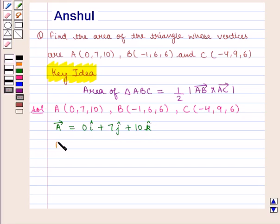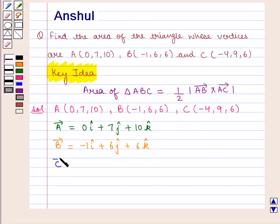Position vector of B is given by minus 1 i-cap plus 6 j-cap plus 6 k-cap. And position vector of C is given by minus 4 i-cap plus 9 j-cap plus 6 k-cap.